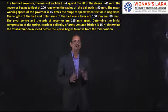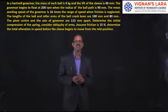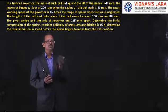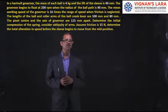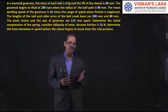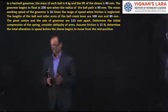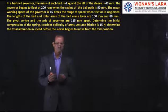Determine the total alteration in speed before the sleeve begins to move from the mid position. There are two parts in the problem: first, considering obliquity, find the initial compression of the spring. Note that the equation S = 2A²/B² × (F2 − F1)/(R2 − R1) is valid only when neglecting obliquity, so we cannot apply it here. Let us write the data using standard notation.